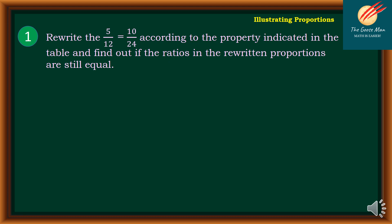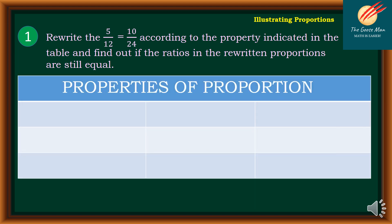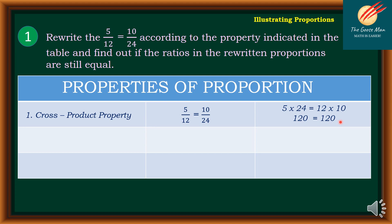Let's have example number one. Rewrite 5 over 12 is equal to 10 over 24 according to each property and find out if the ratios in the rewritten proportions are still equal. The first property is the cross-product property: 5 times 24 is equal to 12 times 10. Clearly, 120 is equal to 120, so it is a proportion.